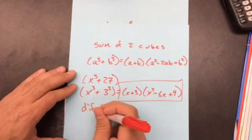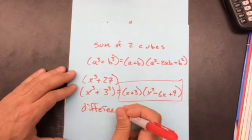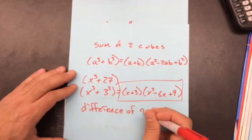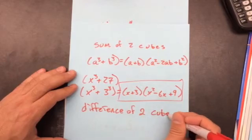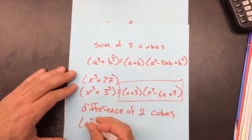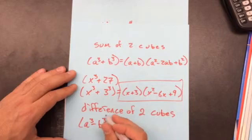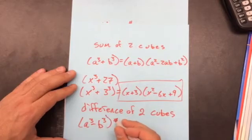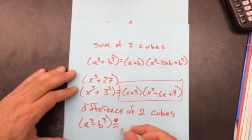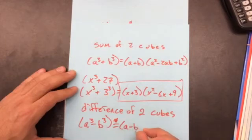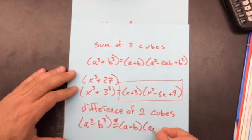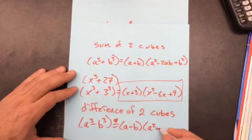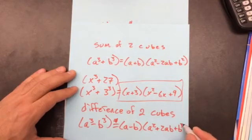You also have the difference of two cubes. Difference of two cubes looks very similar, except for it's subtraction. So what changes here is this becomes a minus instead of a plus. And this becomes a plus instead of a minus.